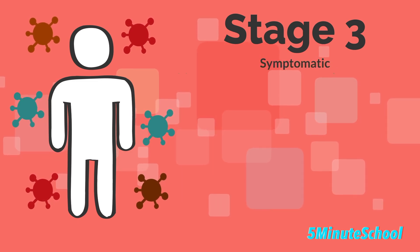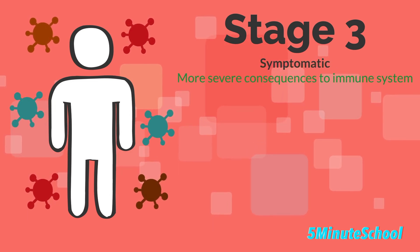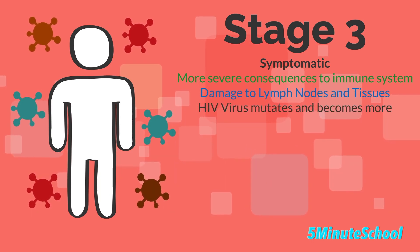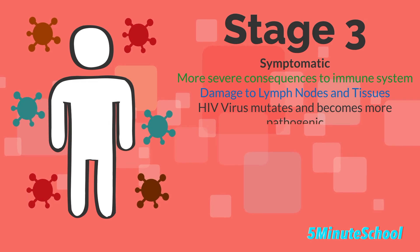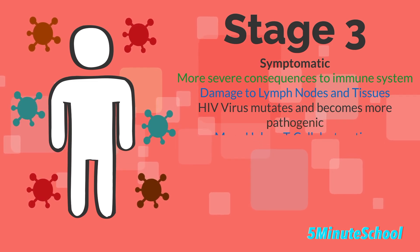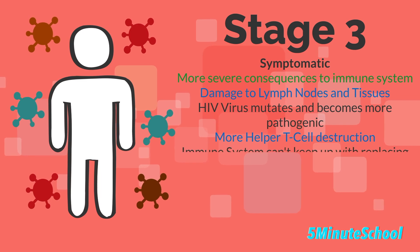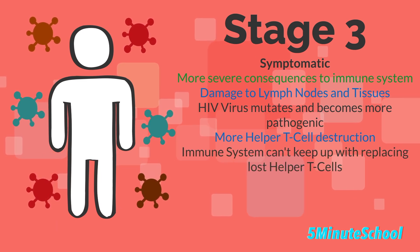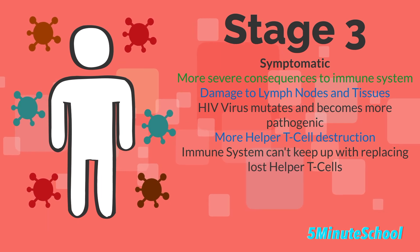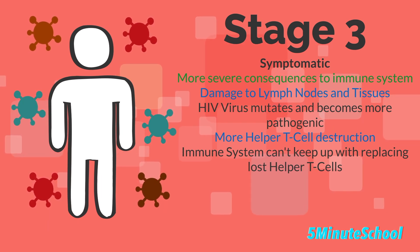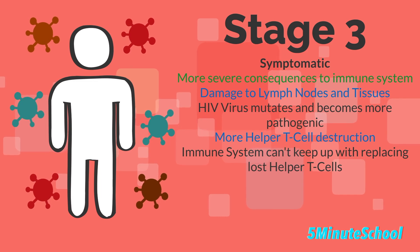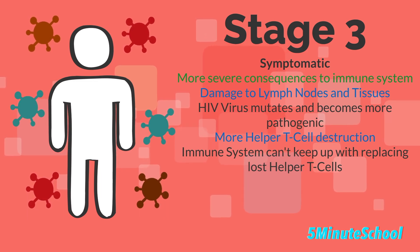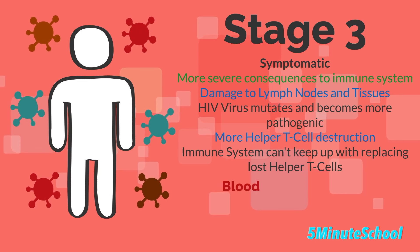Stage 3 is the HIV symptomatic phase, where we start to see more severe consequences to the immune system. It becomes severely damaged by HIV, with damage to the lymph nodes and tissues. The HIV virus mutates and becomes more pathogenic, causing more T helper cell destruction. The body can't keep up with replacing these lost helper T cells, so the immune system starts to fail and symptoms develop. Mild symptoms occur initially but get worse, and multi-system diseases and infections can affect all body systems because of the reduced immune response.